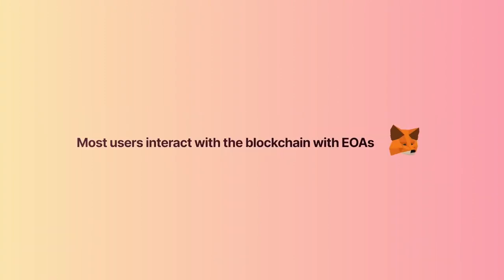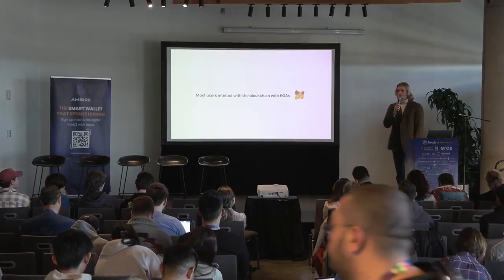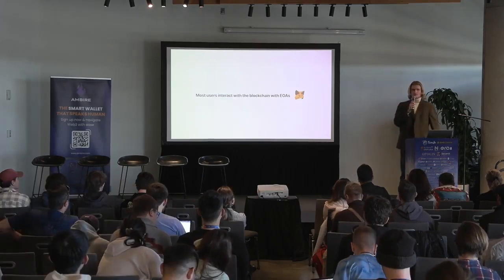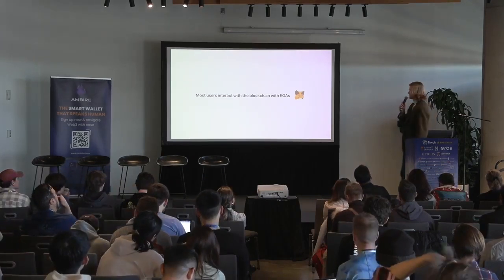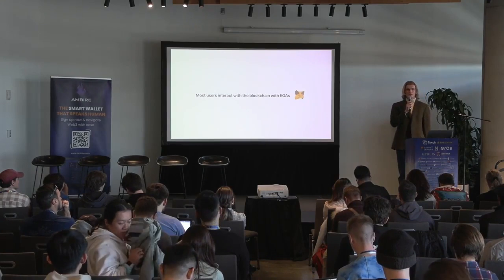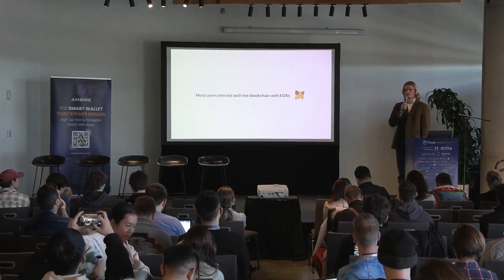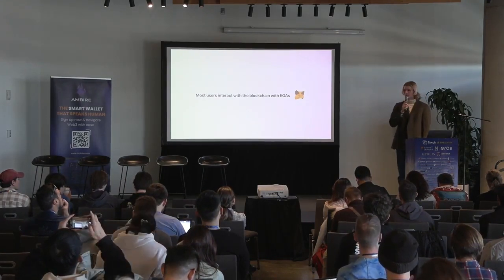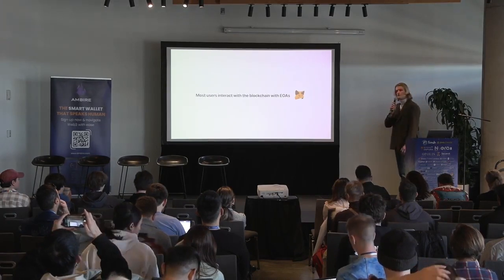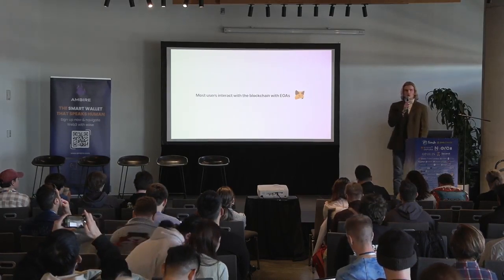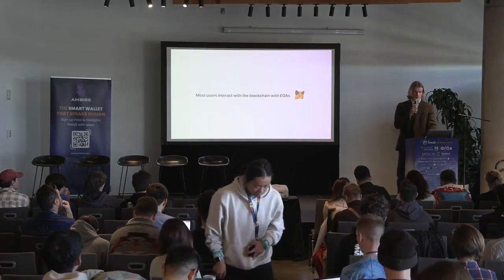Here's the situation we have today: most users interact with the blockchain with EOAs — externally owned accounts. This is something external to the protocol, and for most people that's MetaMask. And frankly, that UX sucks. You've got to have a private key, you've got to lose the private key, and then lose it another five times until you realize you should probably not put it in an Apple note. This is just the situation we have today; it's baked into Ethereum's core protocol.